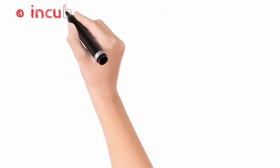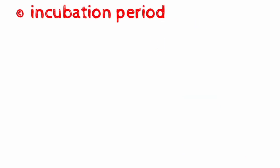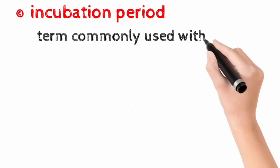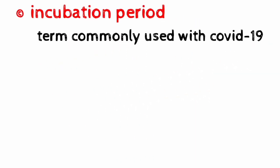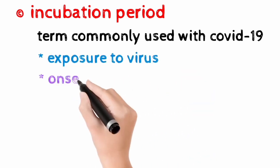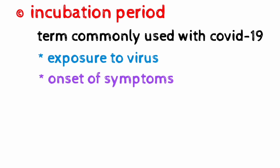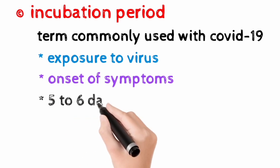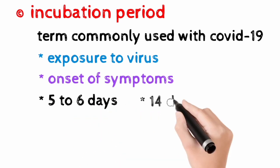So what is an incubation period? A term commonly used in combination with COVID-19 disease. It is basically the time between exposure to virus and onset of symptoms. This period on average is 5-6 days but can be as long as 14 days.